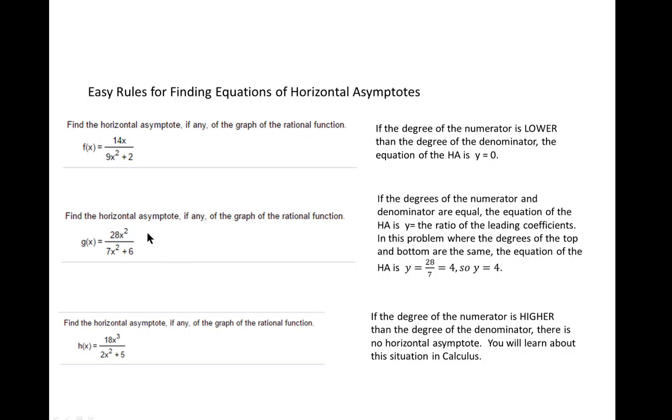When the degrees of the numerator and denominator are the same as they are here, then the horizontal asymptote equals the ratio of the leading coefficients.